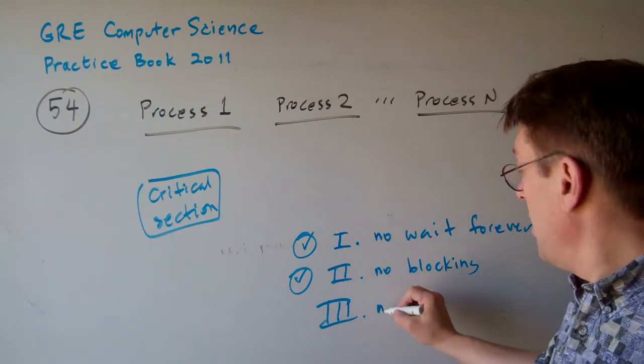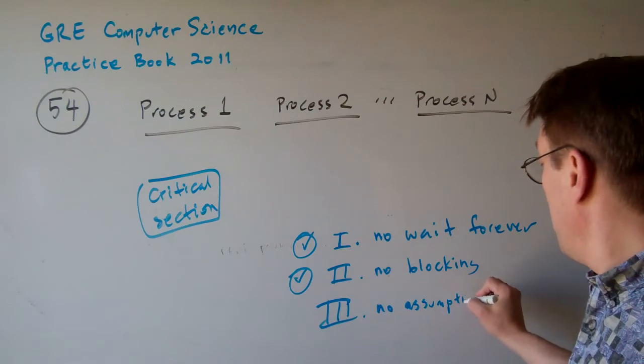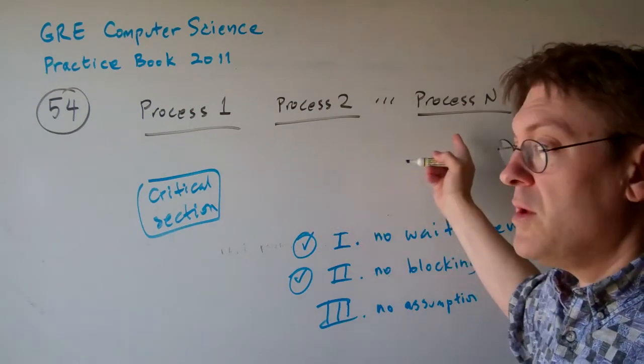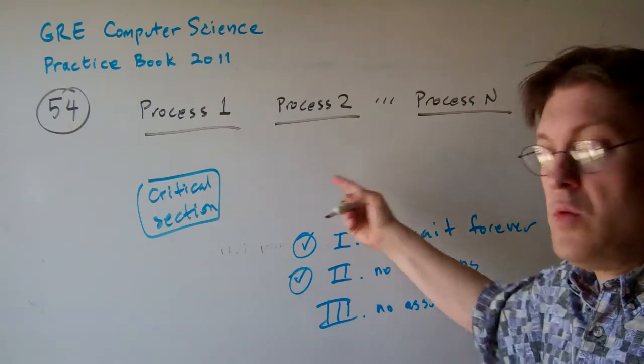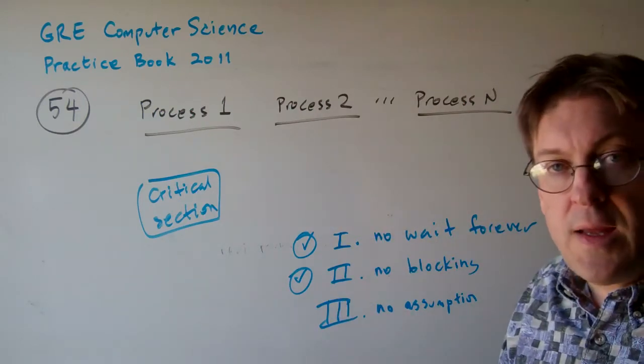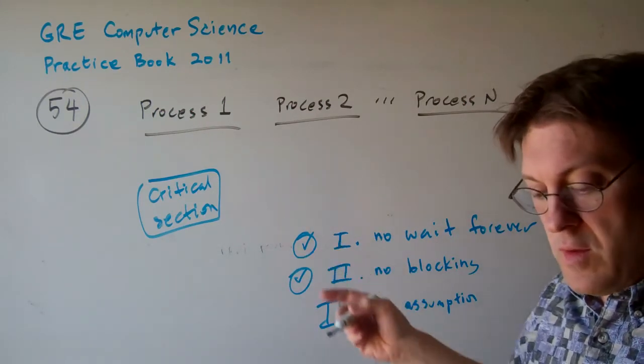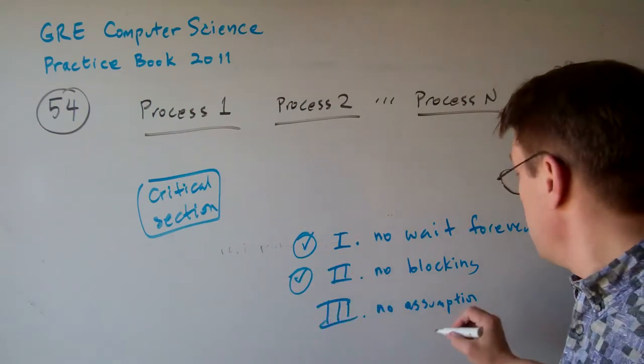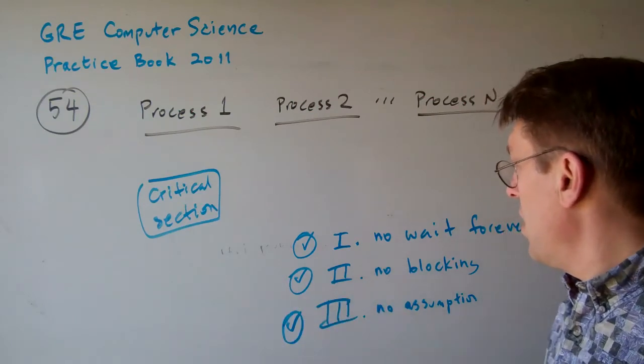There are no assumptions. You may have many processes, you might have only one process, you might have many CPUs, who knows how fast they run. Ideally, it wouldn't matter. The solution for mutual exclusion would work in all cases.